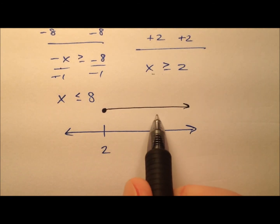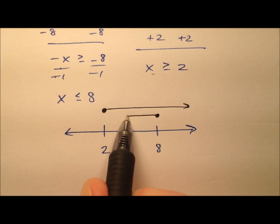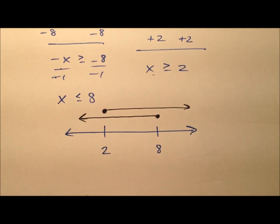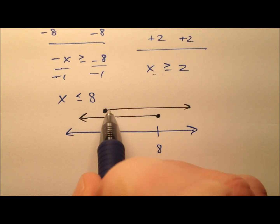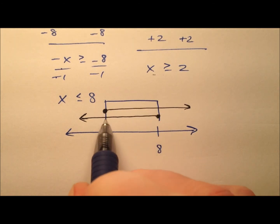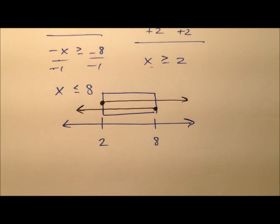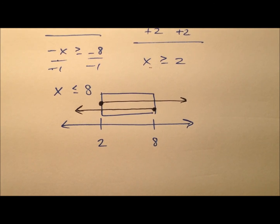And we also have a closed circle at 8 because it equals 8 and we're moving this way. So we need to concern ourselves with this overlap right here. So it looks like it's just going to be everything from 2 to 8. And indeed, it does include the endpoints as well.